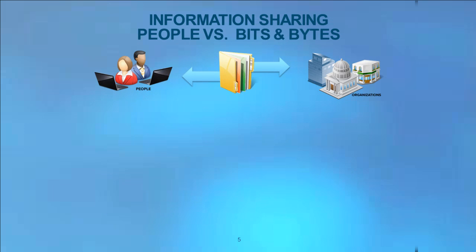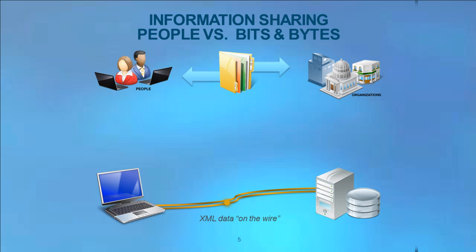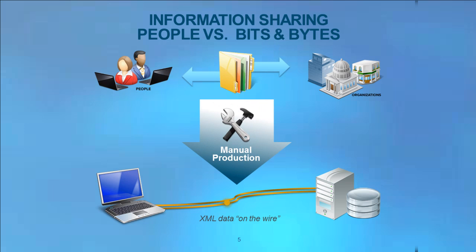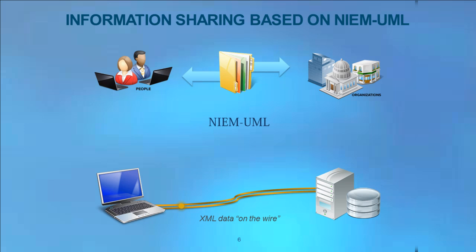People and organizations think about the information they need to share. NIEM at the XML level defines the structure of data on the wire using XML. Worrying about business information needs, along with the bits and bytes of hundreds of technology rules, can get complicated and requires that the technical specifications be manually produced.